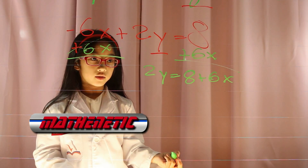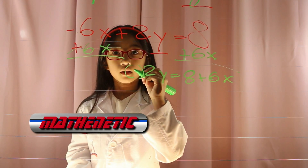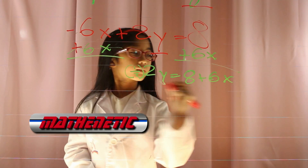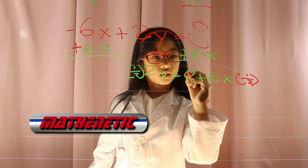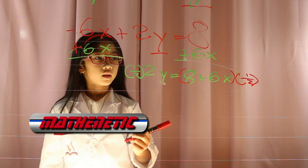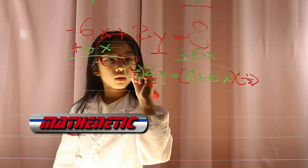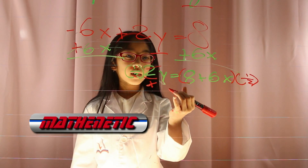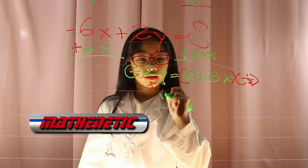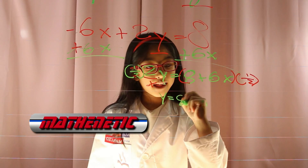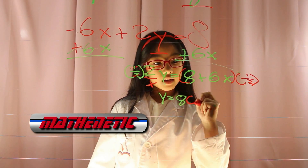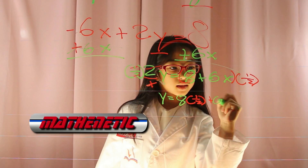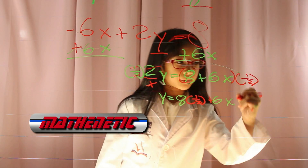What is the second thing you need to do? You need to multiply 2 by the reciprocal of it. Pretend there's a 1 under 2. The 1 and the 1 cancel, and the 2 and the 2 cancel. Now you only have one y. y equals 8 times ½ plus 6x times ½.